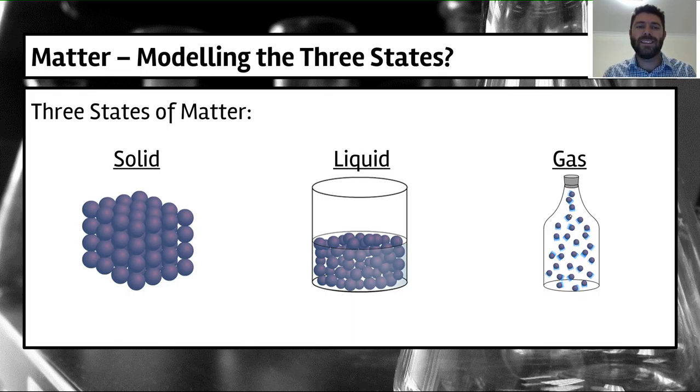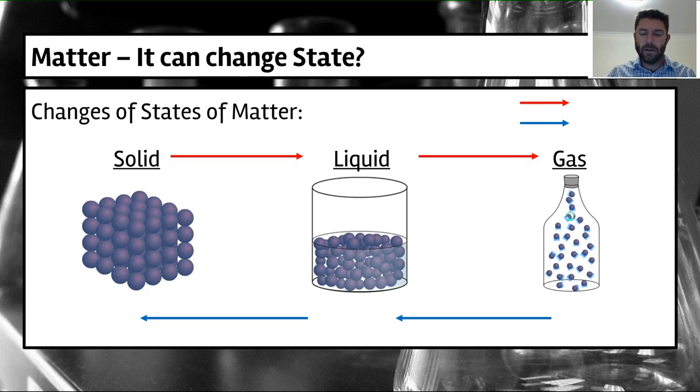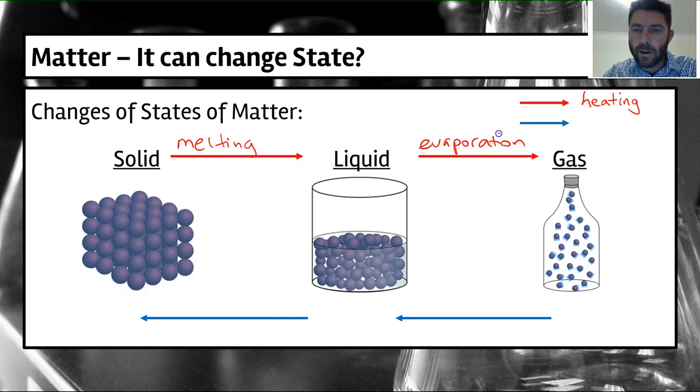One thing you may have done before with the three states is looked at when they actually change. I'm going to go through some terms now when they change, and then moving on we can actually start to use the particle theory to explain these changes. So what we've got to start with is solid, liquids, and gases here, and you can see I've actually got some arrows here going in two different directions, colored red and blue. For the red ones, we're actually going to be looking at the changes when we're heating up the matter. So when we go from solid to liquid, we call that melting. When we go from liquid to gas, we call that evaporation.